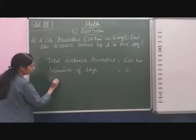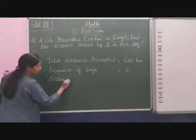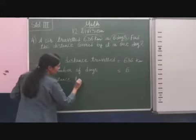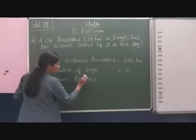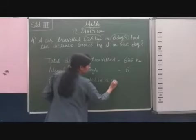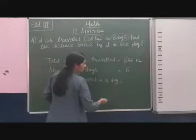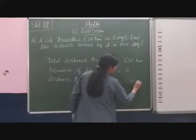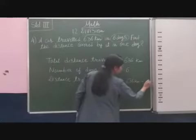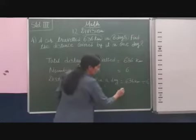Distance travel in a day is equal to 636 km divided by 6.